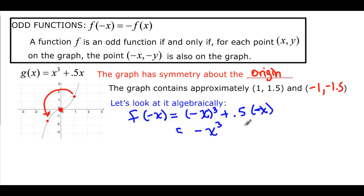So -x^3. And 0.5 times -x will give me -0.5x. And you notice that this is a negative and a negative. Both my signs are negative, and in my original problem both my signs were positive. So the signs are opposite, so I know that it is going to be an odd function.